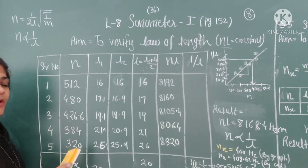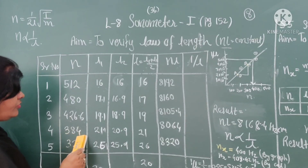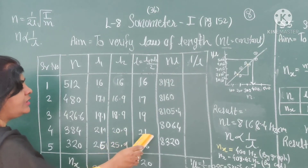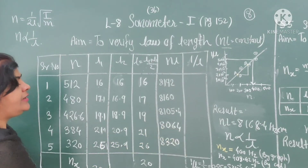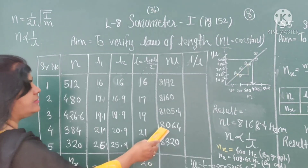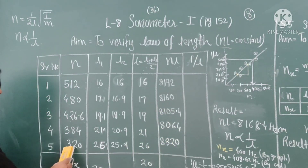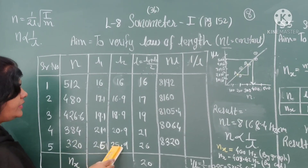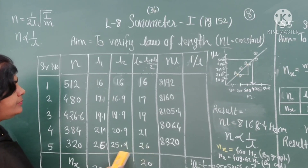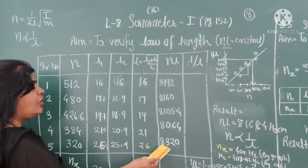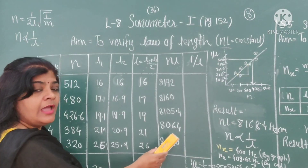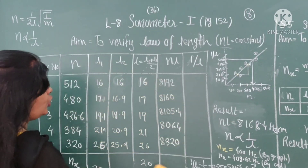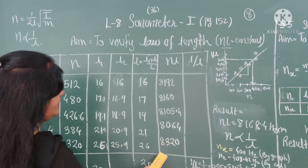For the fourth reading: frequency 384, L1 is 21.1 and L2 is 20.9, mean is 21, and NL comes to 8064. For the fifth reading: frequency 320, readings are 26.6 and 25.9, mean is 26.6, and after log calculation NL gives 8320. Like that, complete the observation table for NL.